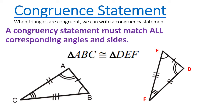What is a congruency statement? When triangles are congruent we can write a congruency statement — a statement where all corresponding sides and angles match. If we look at the congruency statement 'triangle ABC is congruent to triangle DEF,' angle A will be congruent to angle D, and indeed angle D has those two congruence marks.